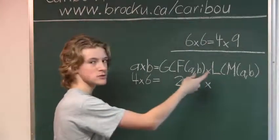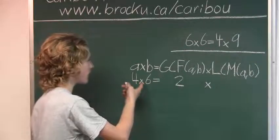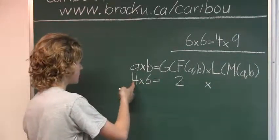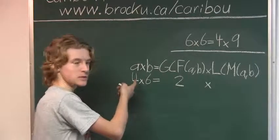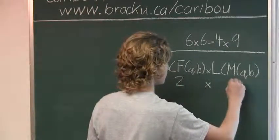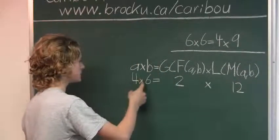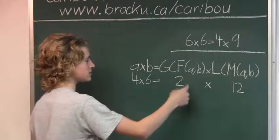So the greatest common factor of 4 and 6 would be 2. And the lowest common multiple of A and B, which is 4 and 6, would be 12. Because 3 times 4 would be 12, and 2 times 6 would be 12. So as you can see, 4 times 6 is 24, and 2 times 12 is 24.